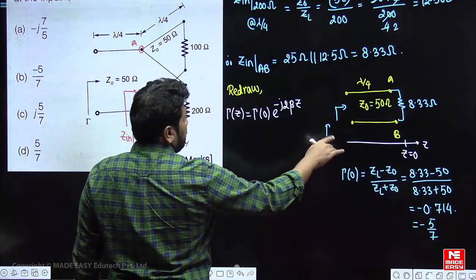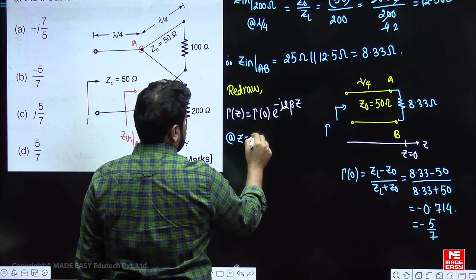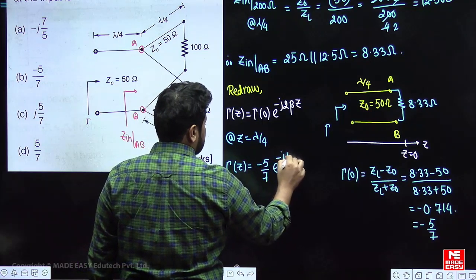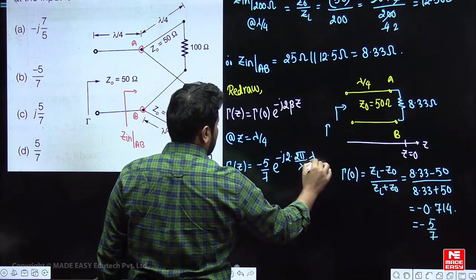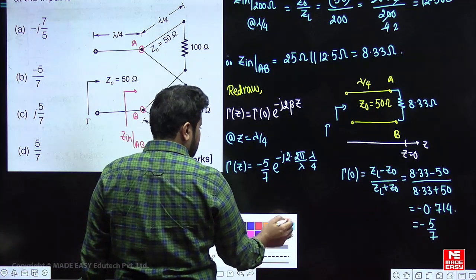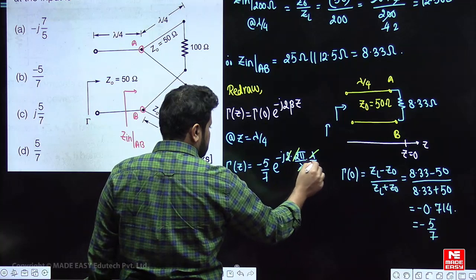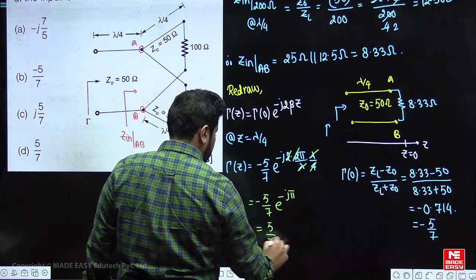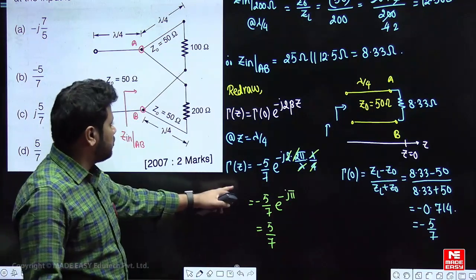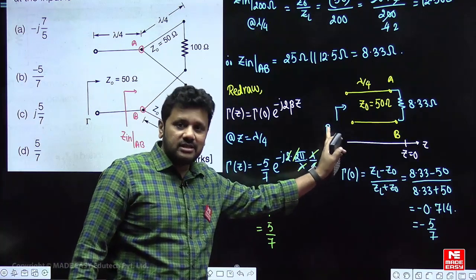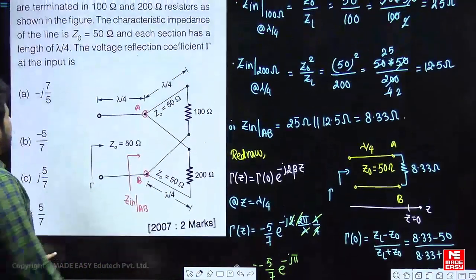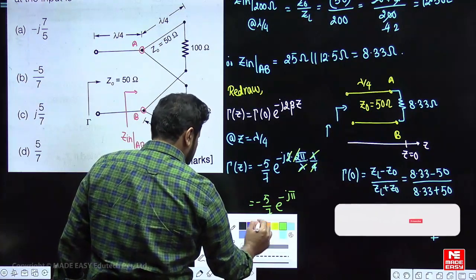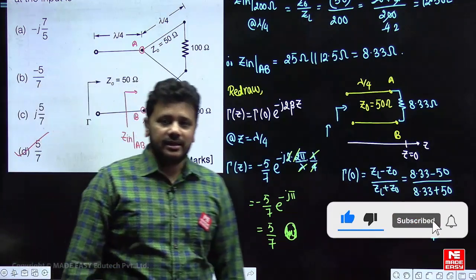At Z equal to lambda by 4, the reflection coefficient is γ = (−5/7) · e^(−j · 2 · (2π/λ) · (λ/4)) = (−5/7) · e^(−jπ). Since e^(−jπ) = −1, this gives γ = 5/7. So the voltage reflection coefficient at the input is 5/7, making option D the correct answer.